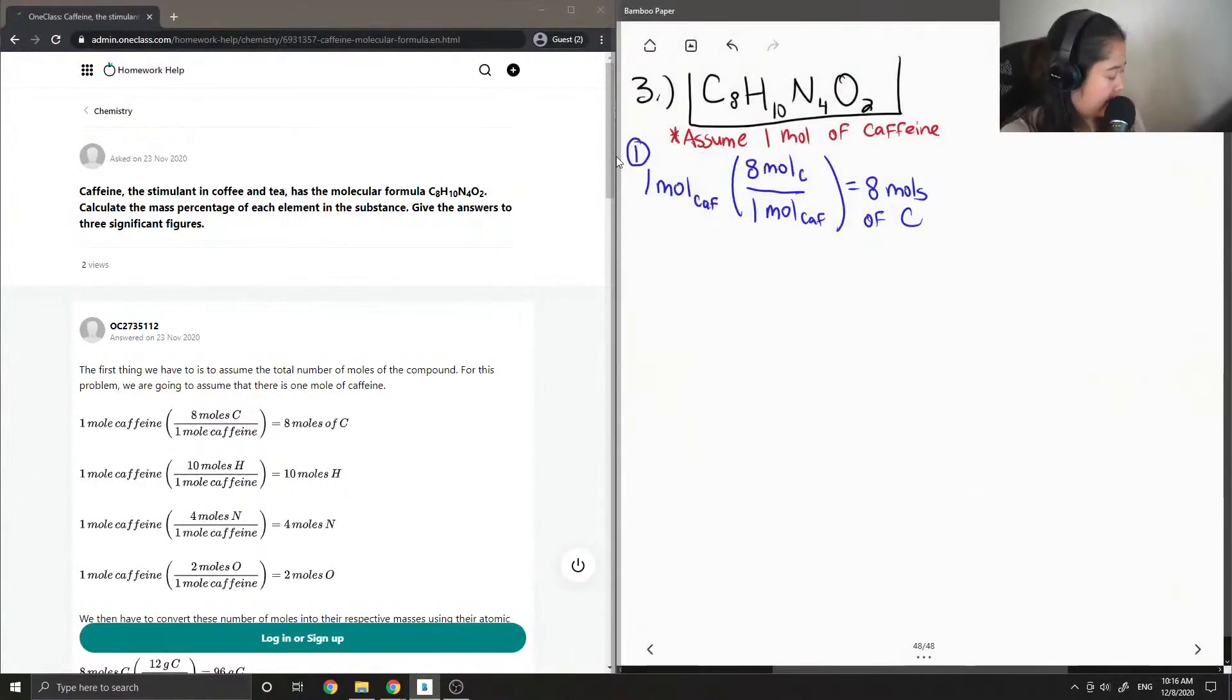Okay, so now we know that we have eight moles of carbon. If we multiply by carbon's atomic mass, which is 12.01 grams per mole, then we know how many grams of carbon we have, which is 96.08 grams.